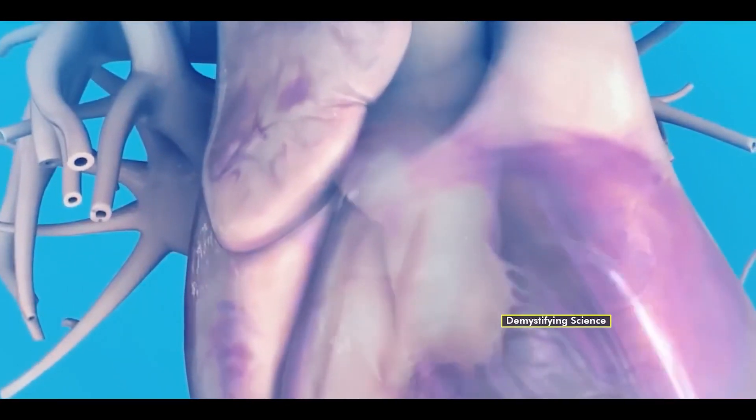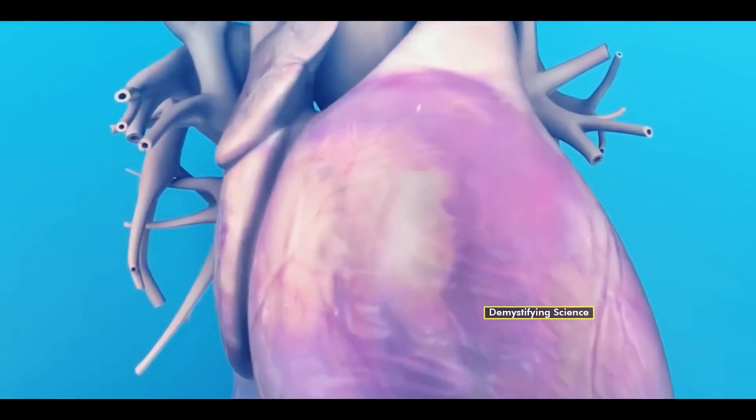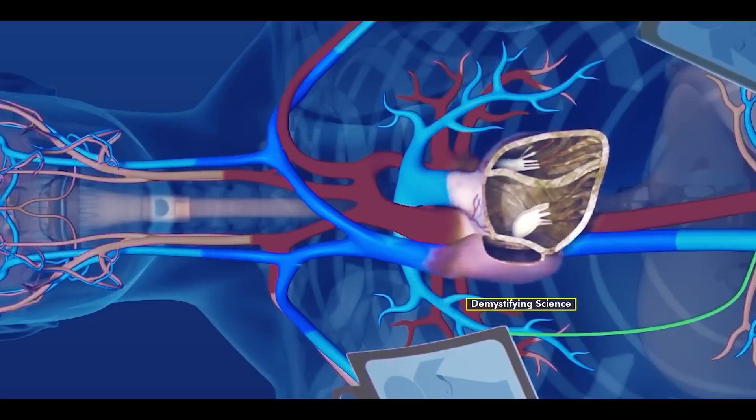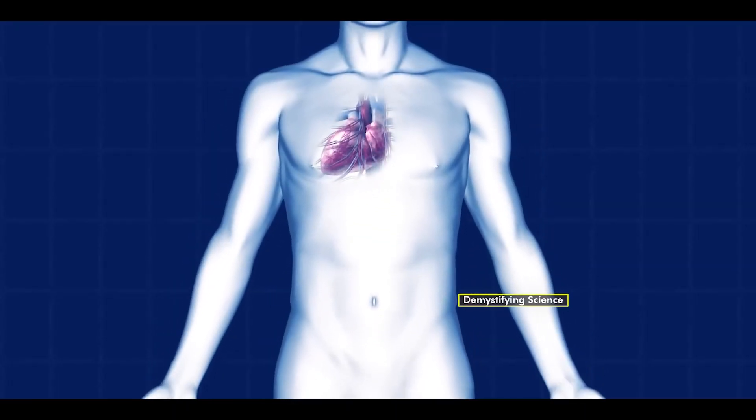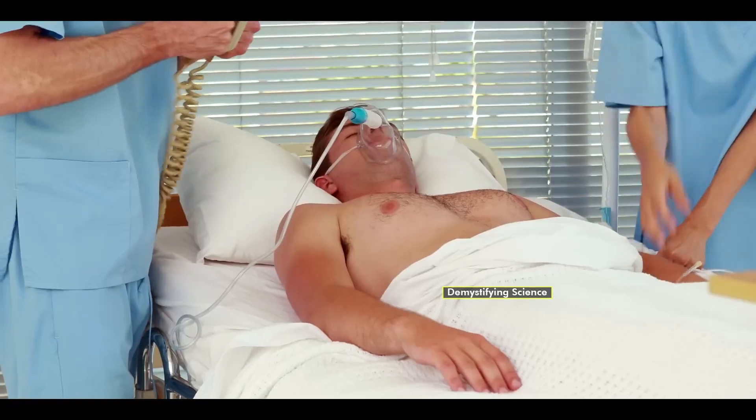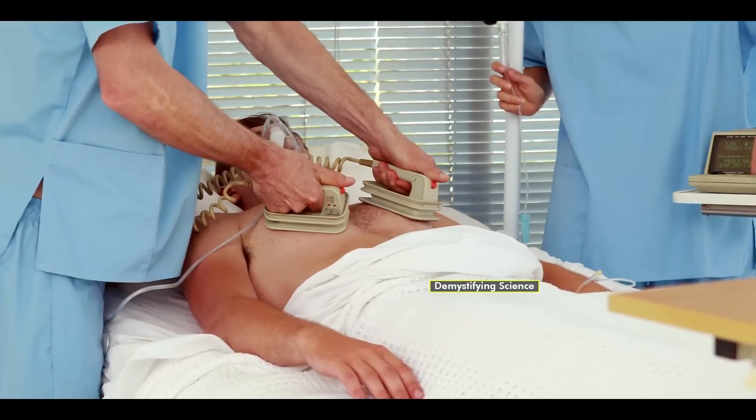Similarly, in pulseless ventricular tachycardia, the heartbeat and contractions of the heart ventricles become so fast that the blood pumping isn't sufficient, resulting in a severe reduction in blood and oxygen flow to the body organs. Defibrillators are also used to normalize the heartbeat in such conditions.